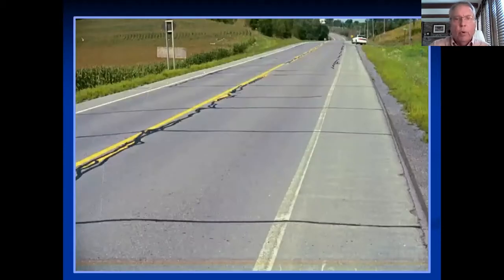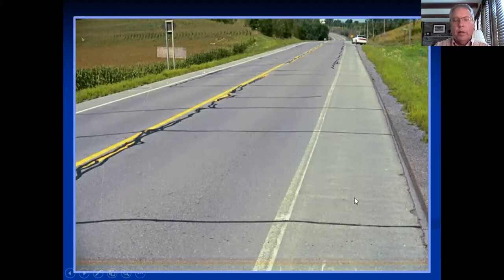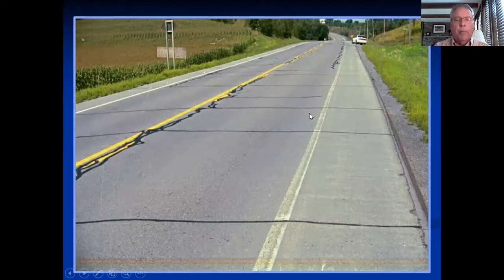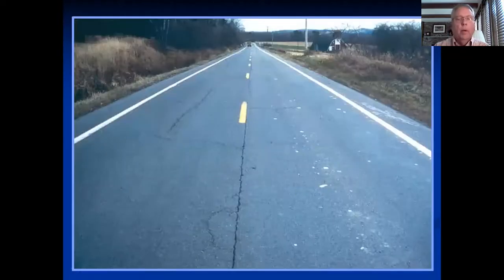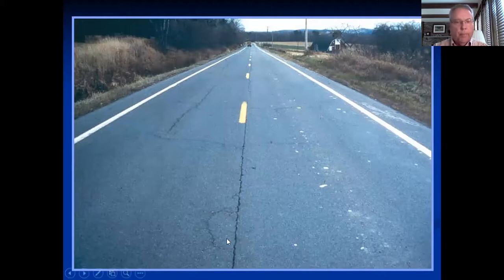Here's an example of transverse or reflective cracking — you've all seen this pattern. This is clearly an overlay that's been there a few years. It's maintained fairly well; the transverse or reflective cracks have been sealed or filled, and so have the longitudinal cracks. Here's a roadway that has not had maintenance. You can see the centerline construction crack — very common — and here's an example where a filler can be used.